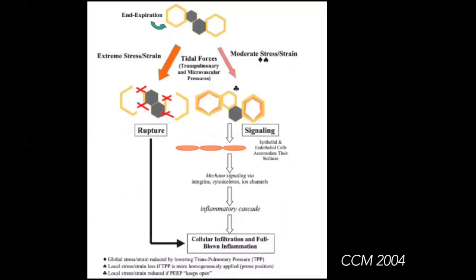When thinking about ventilator-induced lung injury, it's really just excessive forces applied to the lung — termed extreme stress and strain, which are usually volume- or pressure-related forces. These lead to architectural injury to alveolar units and set up an inflammatory process in the lung, with cytokines being released and further inflammation. This inflammation is not limited to the lung itself: we see systemic inflammation, leading to other organ dysfunction and ultimately worse outcomes and mortality.